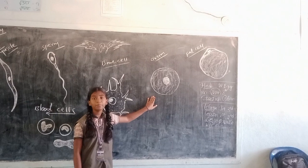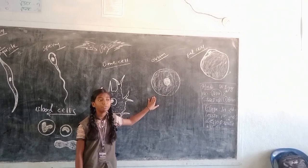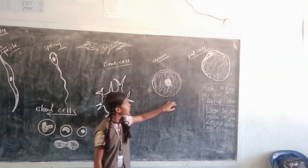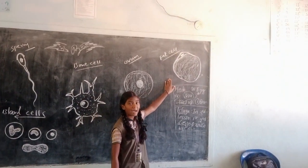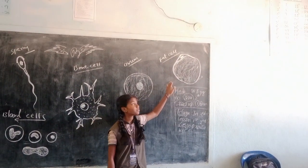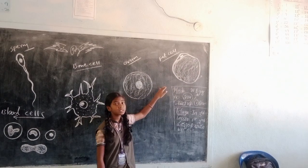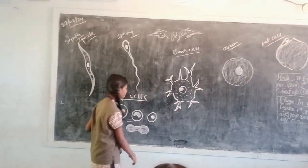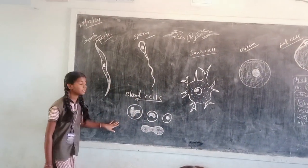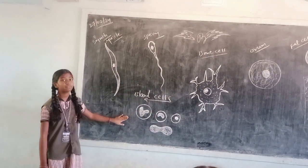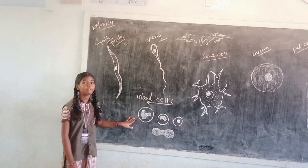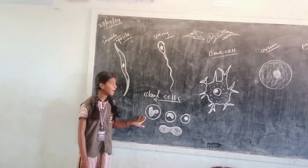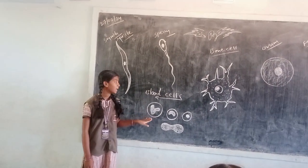This is the ovum which is present in the female reproductive system. This is the fat cell which is present under the skin. And these are the different types of cells which are present in humans and animals.